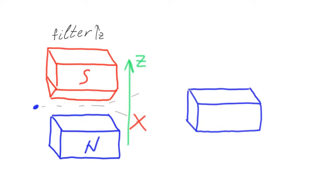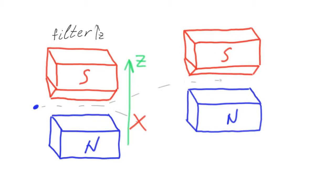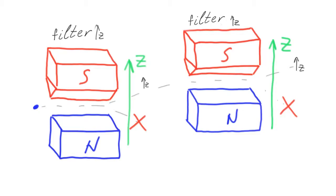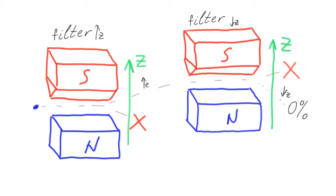In a sequence of two devices, the second one will transmit all incoming electrons because they already have their spins up along the z-axis, and the filter transmits spin up electrons. If we make another sequence with a z-axis filter that blocks spin down electrons, followed by a second device that blocks spin up electrons, there will be no electrons at the output.